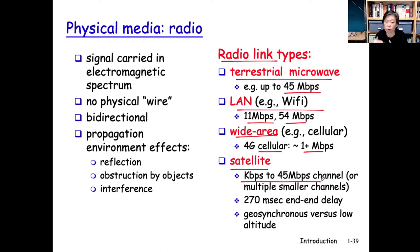On the satellite, it can go from kilobits per second to 45 megabits per second, but one common feature is this: for satellite links, end-to-end delay will always be much longer than all these other wireless link access.